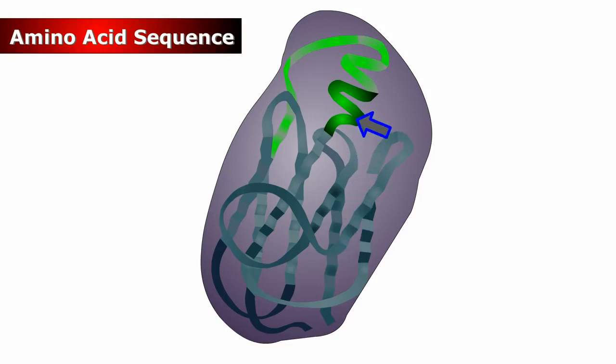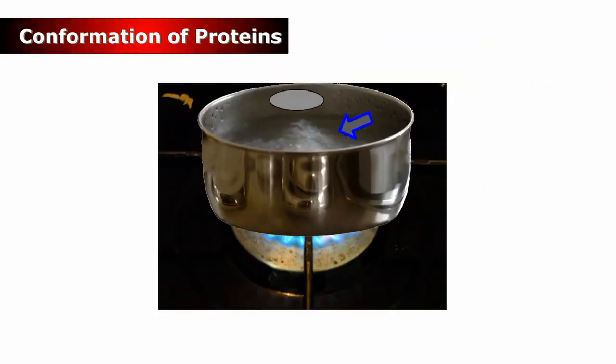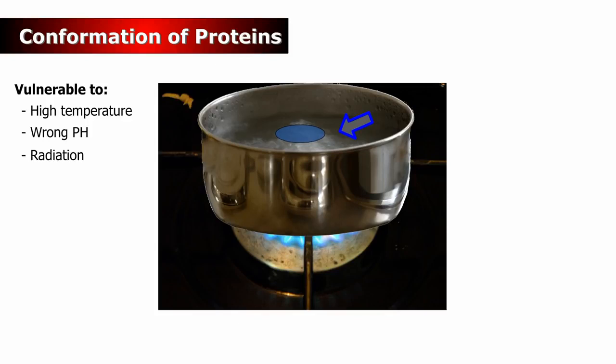The conformation determines the protein's function. The conformation of protein is vulnerable to destruction by high temperatures, the wrong pH, radiation, and chemicals. Many proteins are denatured this way.